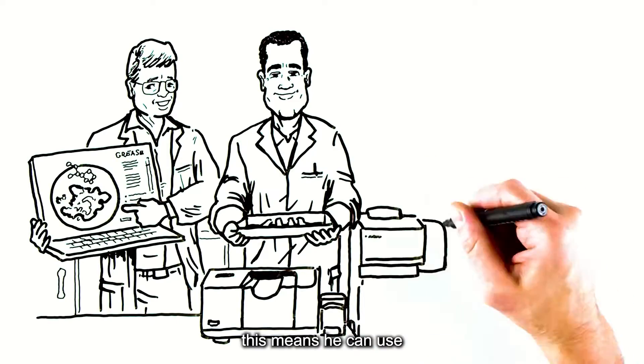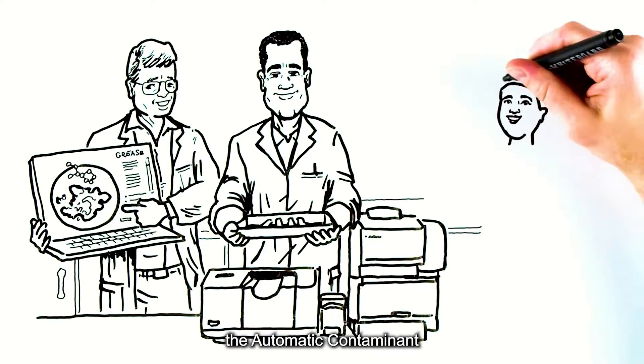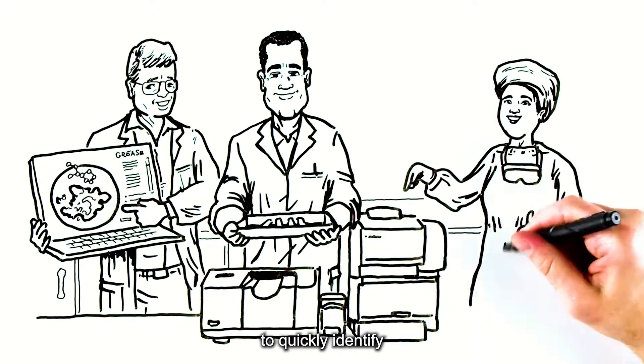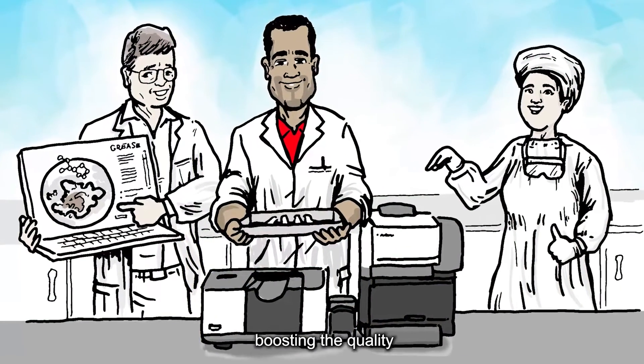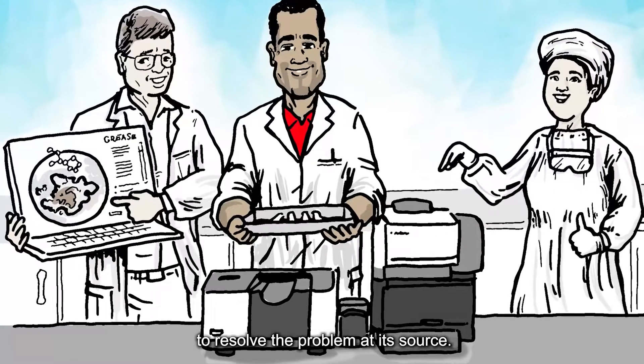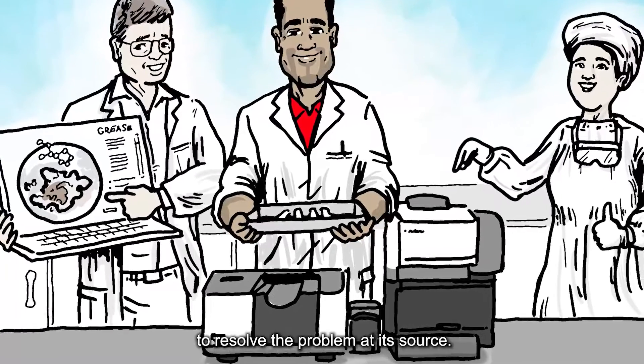For Arturo, this means he can use the Automatic Contaminant Recognition System to quickly identify the contaminant on the plastic syringes as grease, boosting the Quality Assurance Team's ability to resolve the problem at its source.